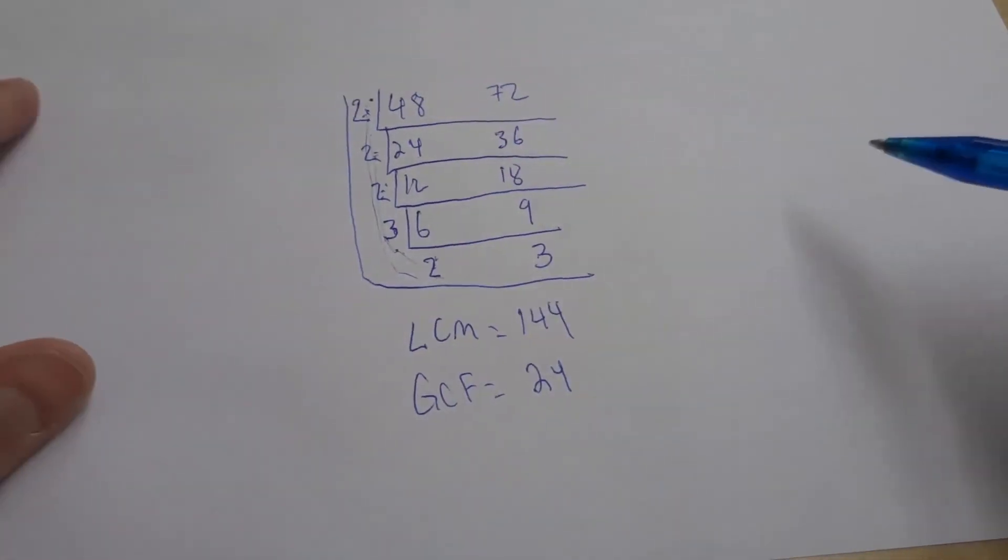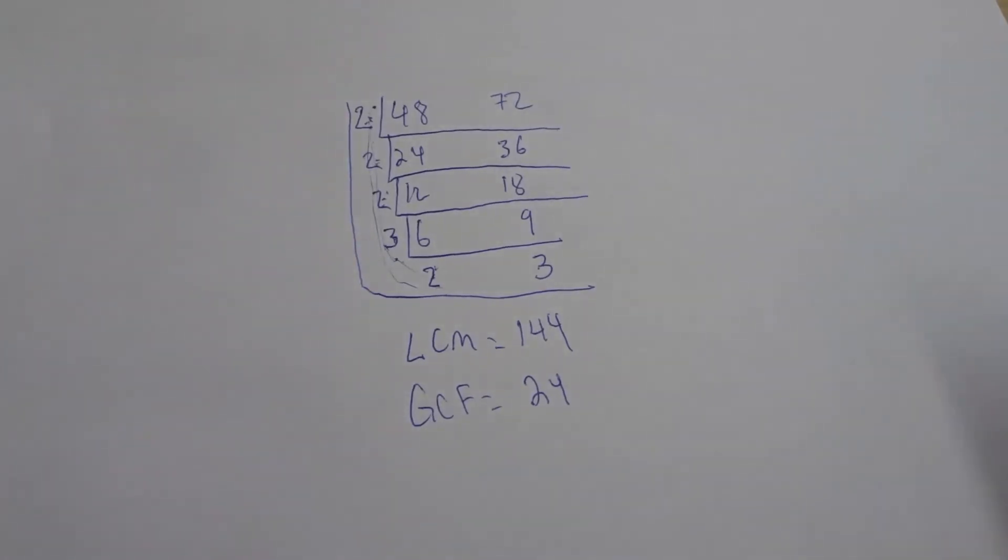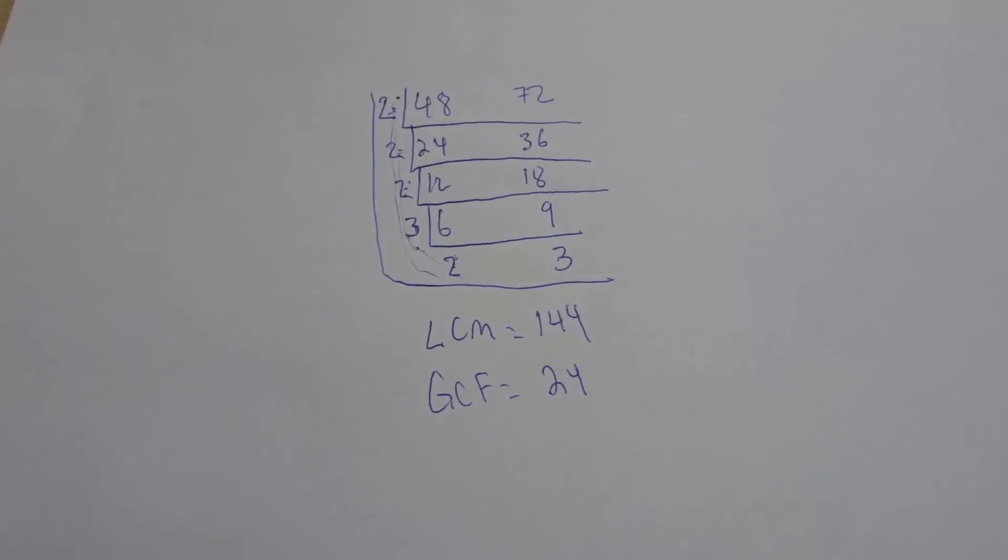And that's it. It's literally that simple. That is the ladder method for finding the LCM and GCF. If you like this video, please be sure to give it a thumbs up. Let me know what you think down below as a comment. And of course, be sure to subscribe for more great videos just like this one. And that's all I have for you today. Thanks for watching.